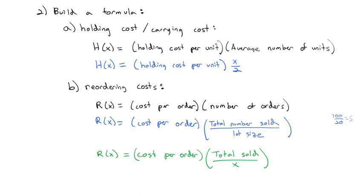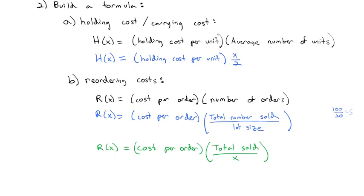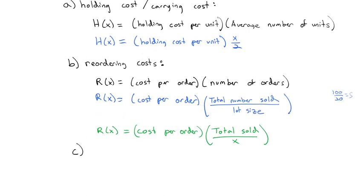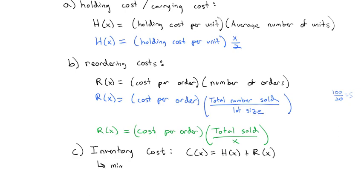These two pieces make up our expenses: h(x) the holding cost and r(x) the reordering cost. When we put them together, we get the inventory cost c(x) equals the holding cost plus the reordering cost. We can minimize this by taking the derivative and setting it equal to zero. We identify the holding cost, the reordering cost, add them together, and set the derivative equal to zero.